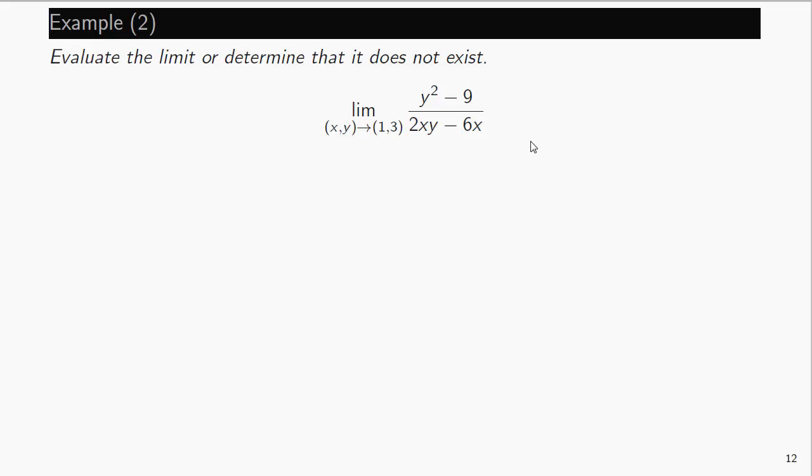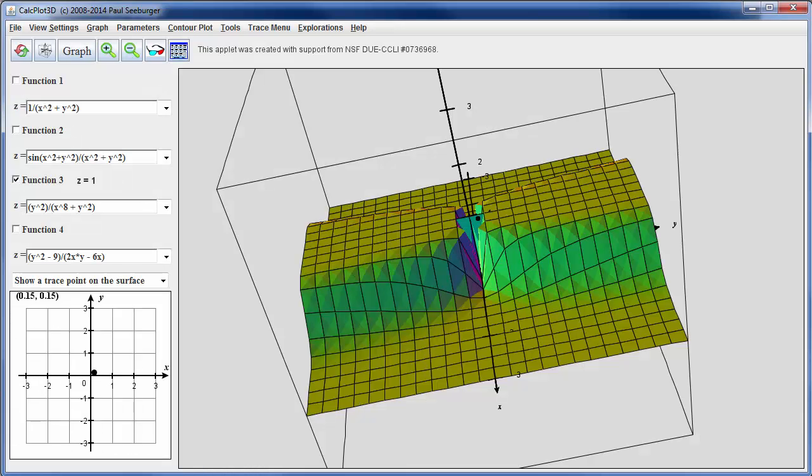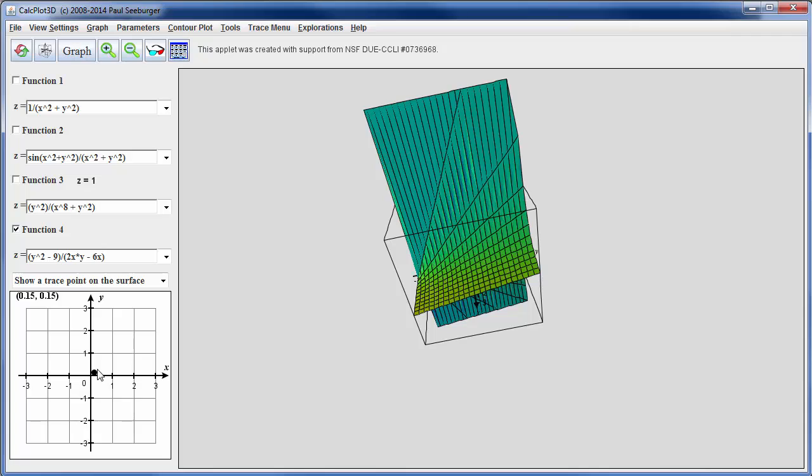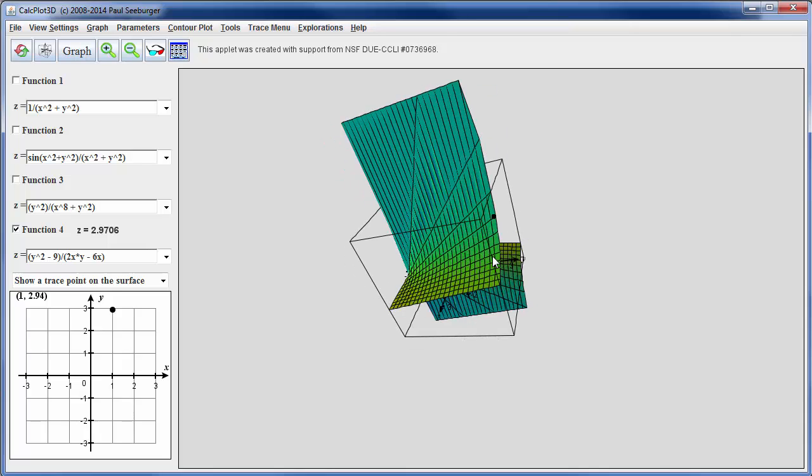Evaluate the limit or determine that the limit doesn't exist. So let's think about this function here. Let's plug in (1,3) and see what happens. If y is 3, that's 9 minus 9, so we get 0 in the numerator. This will be 2 times 1 times 3 is 6, minus 6 times 1. So we get 0 over 0. So this limit may or may not exist. The function is not defined at (1,3). So maybe we'll consider this function its graph. Let's see if I can zoom out a little bit. Here, let me find the point (1,3). That's here. Oh, okay. So it looks to me like the function does seem to be nicely behaved at least near (1,3). So I'm guessing that there is a limit.